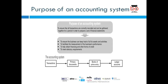When we start our accounting system, it starts with a transaction. Every transaction has two impacts: one is called debit, another is credit — that's why it's known as double entry bookkeeping. The purpose of the accounting system is to ensure all transactions are recorded correctly and can be gathered together for a period in order to prepare a set of financial statements. This helps ensure the business can track its assets and activities, facilitate measurement of business performance, help obtain financing, and meet legal requirements.